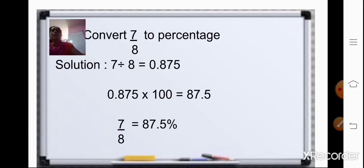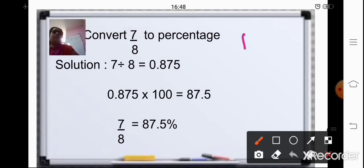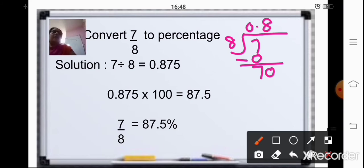Let us start with an example. Here we have to convert 7/8 to percentage. So first we will divide 7 by 8. Now, 7 is not divisible by 8, so we will put a 0. We add a 0 and put the decimal point. Now, 70 divided by 8: 8 eights are 64. 70 minus 64 is 6.